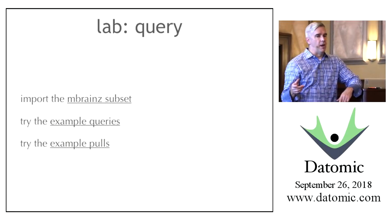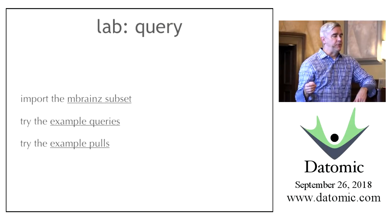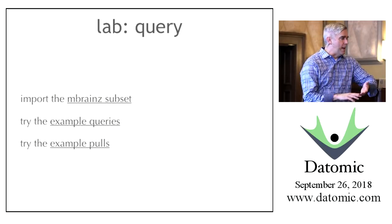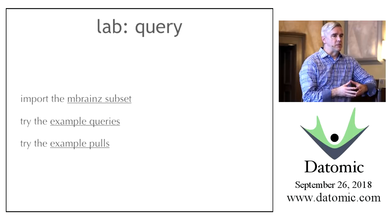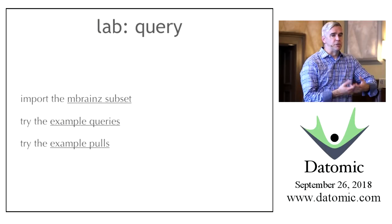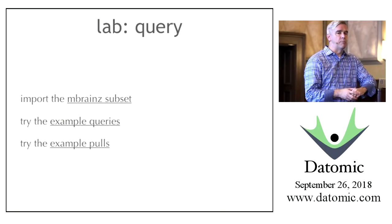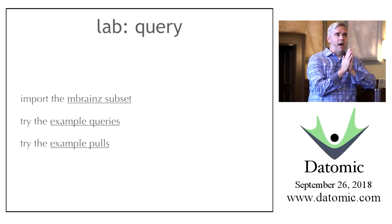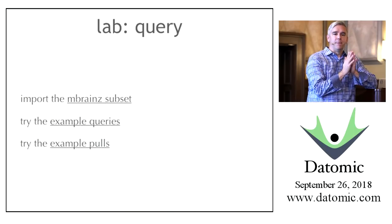I want to do it that way because the query lab stuff is fairly old to Datomic, and there are existing training materials and labs you can do on your own. We're happy to continue to support you in Slack, whereas the stuff about IONS and deployment models is all fairly new and of particular interest to people. But before we do that, any questions about transactions, modeling time, and looking back at the past that we just did in the lab?